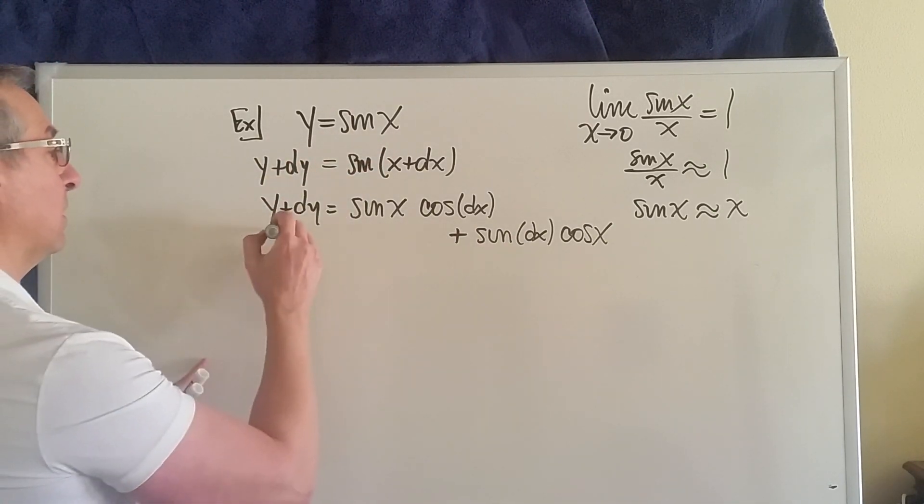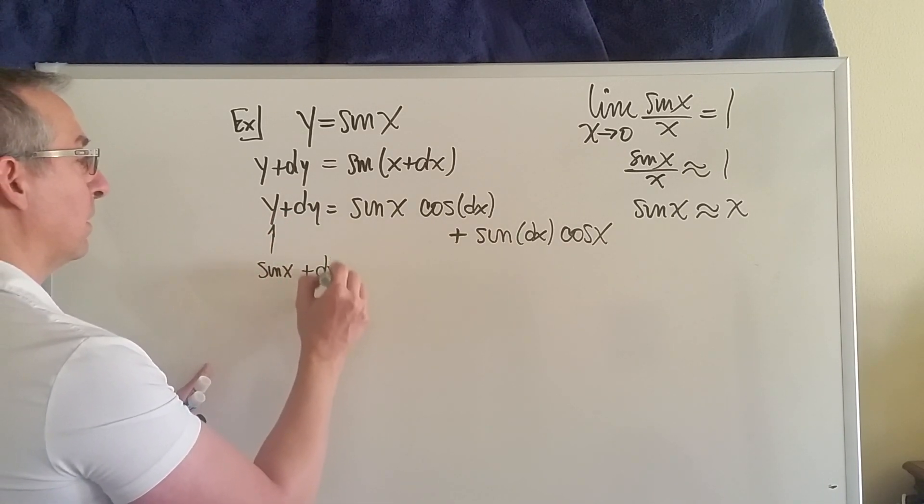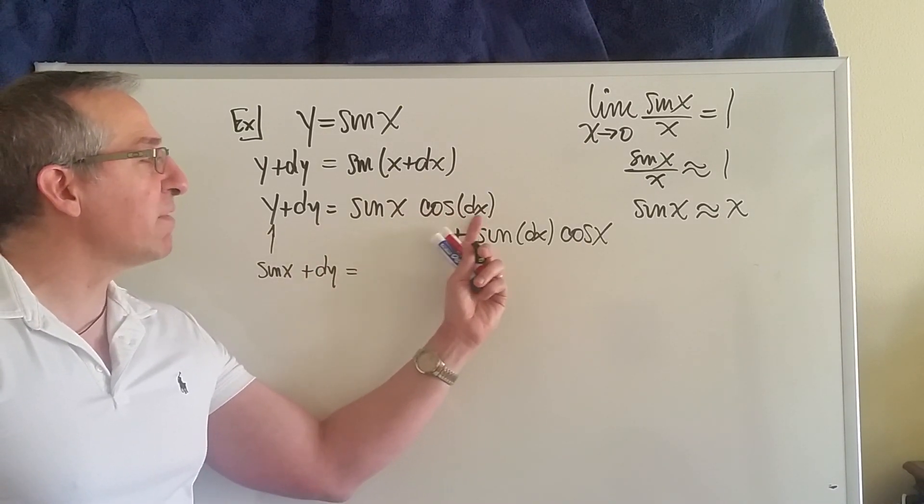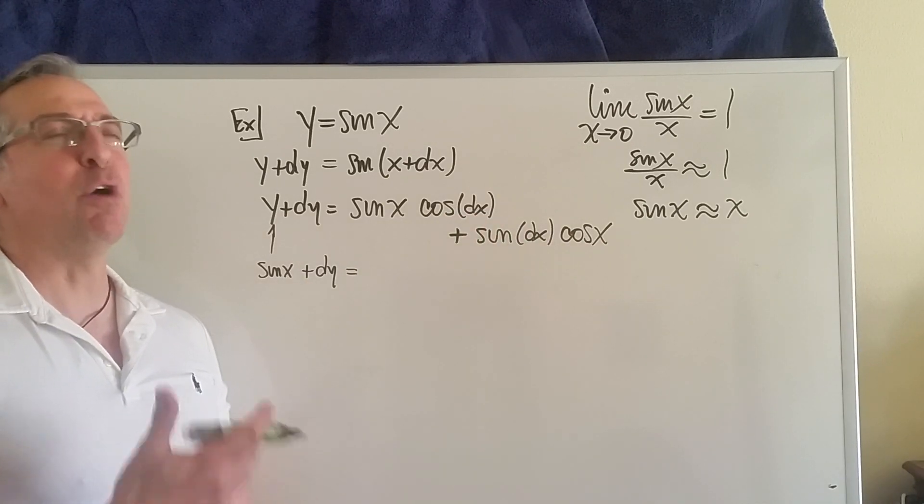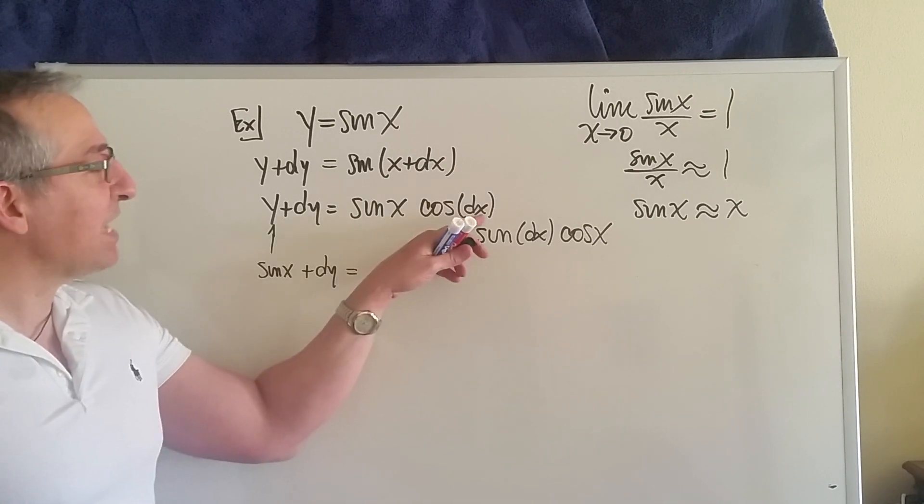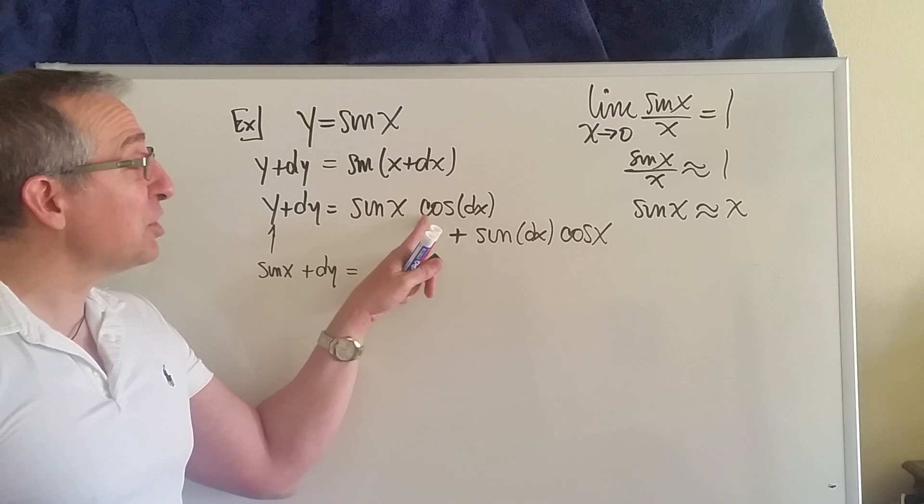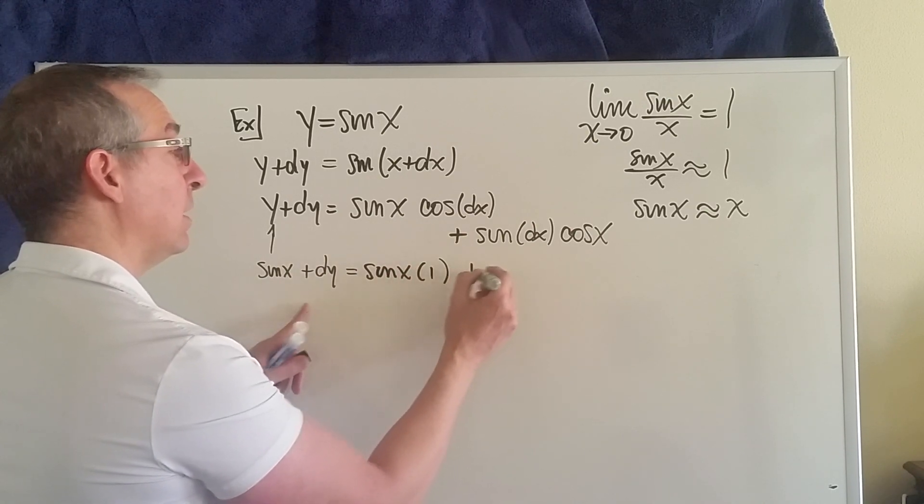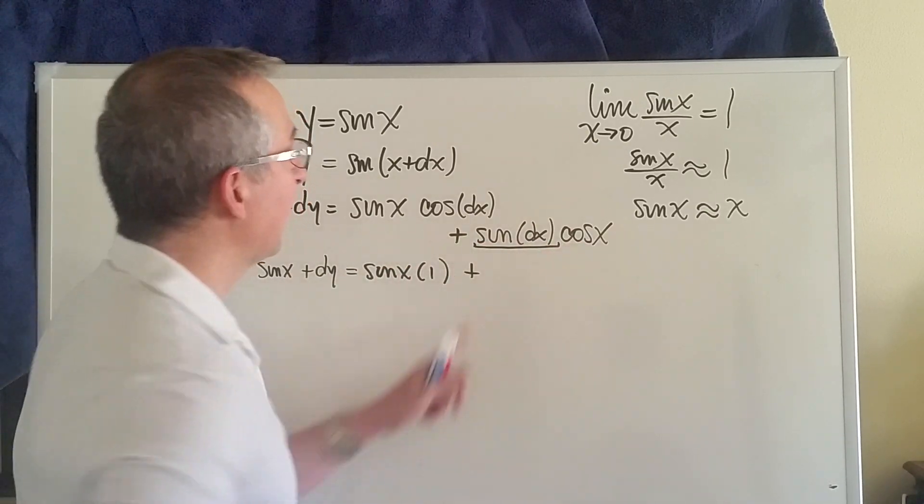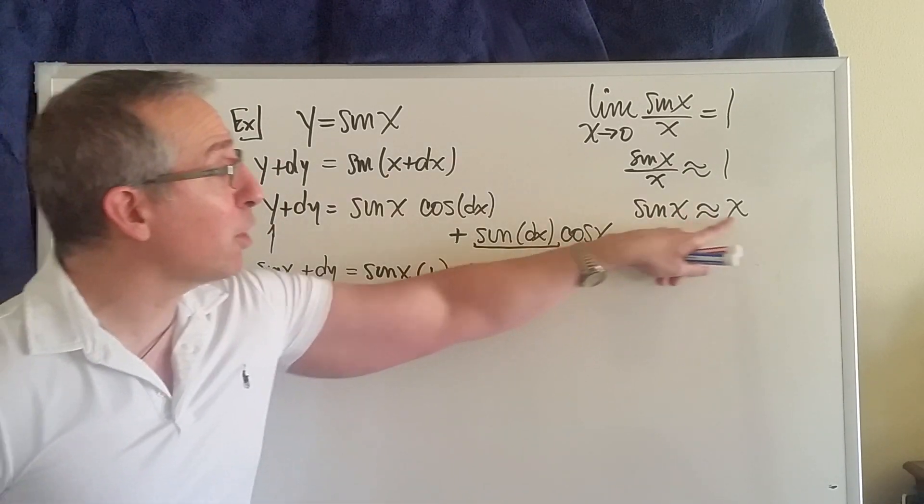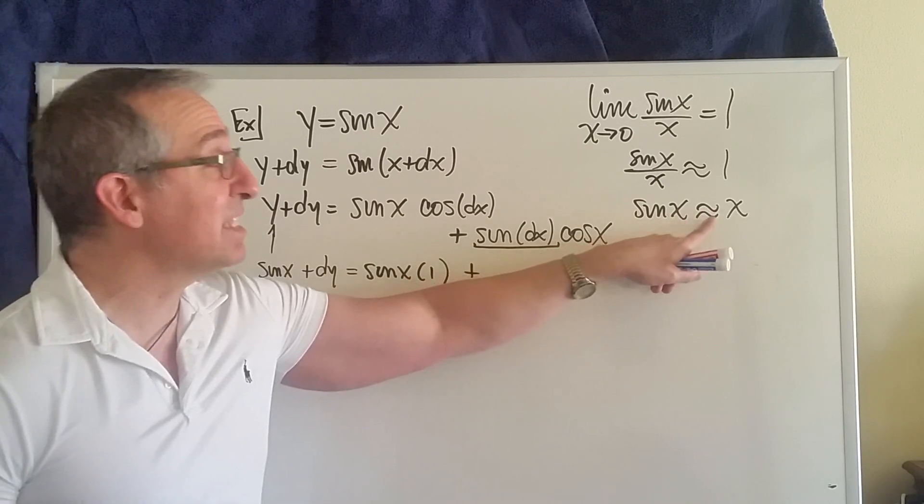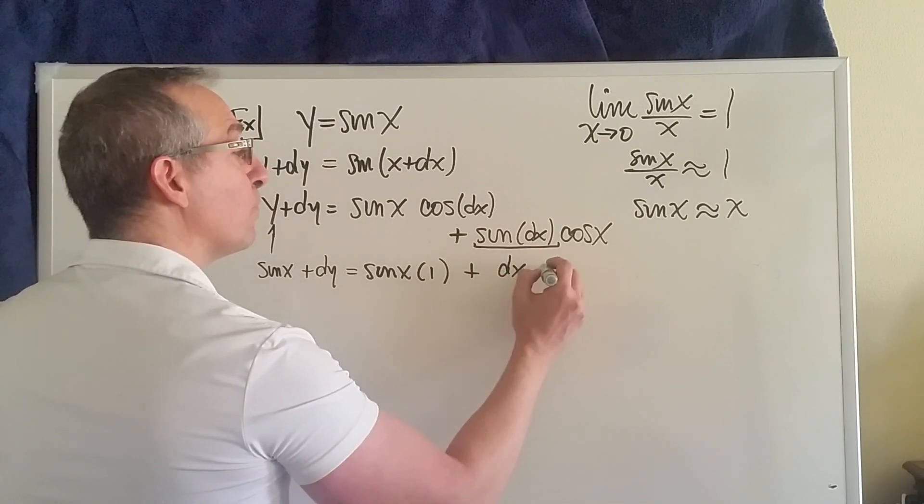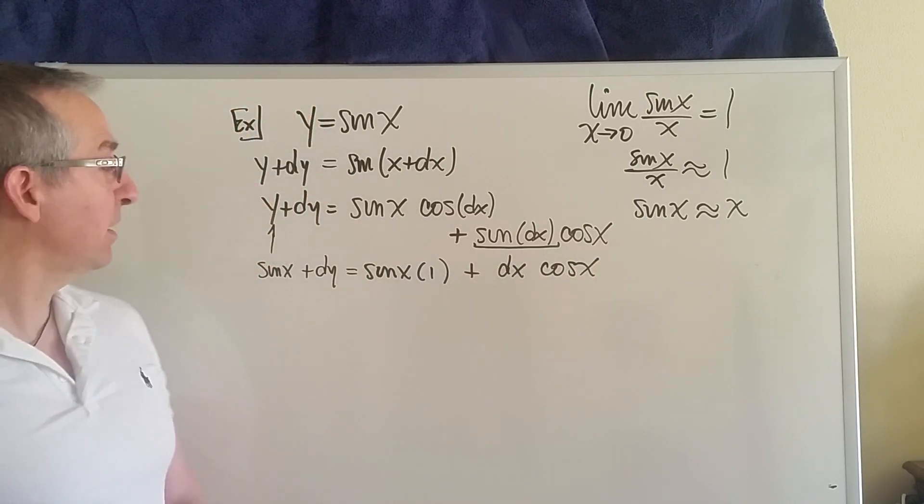Over here on this side, the cosine of x—the cosine of a very small angle. Think of, like, the cosine of 0.0001 and so on. Now, as the angle gets smaller and the differential of x is pretty tiny, the cosine of a very tiny angle is about 1. Over here, look at this: the sine of a very small angle. Well, according to our work over here previously, we said that the sine of a very small angle is essentially the angle itself. So the sine of the angle dx is approximately dx. Next, notice I've got a sine here and a sine here. Subtract them from both sides.